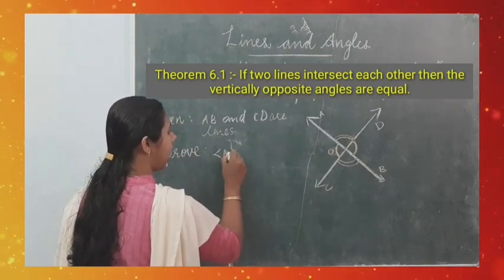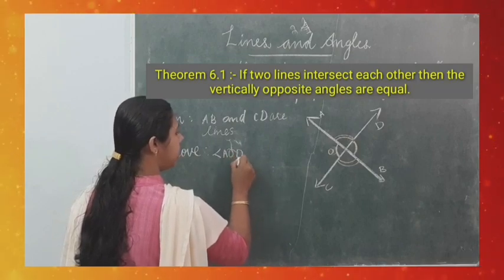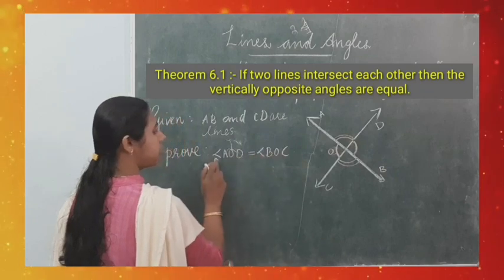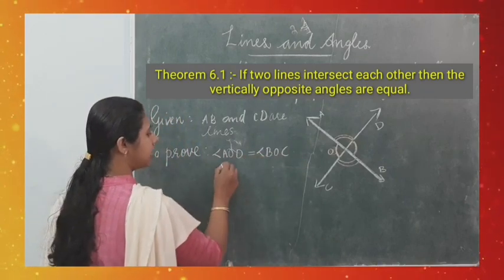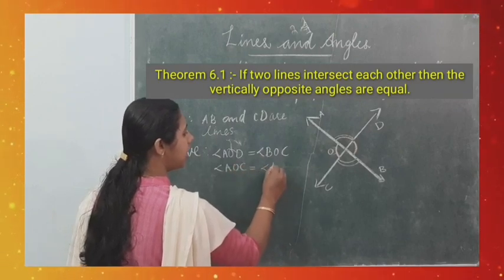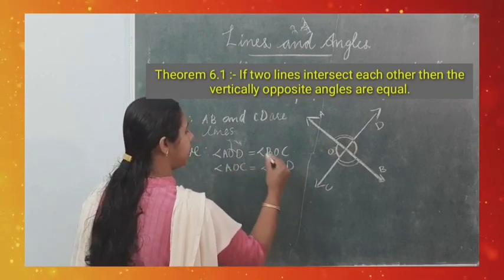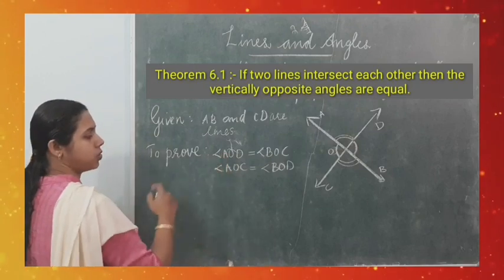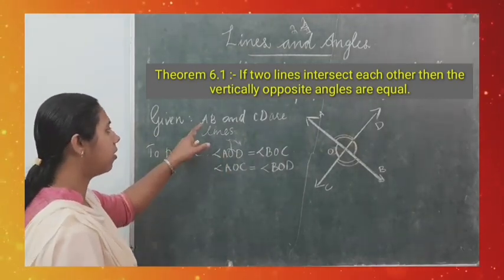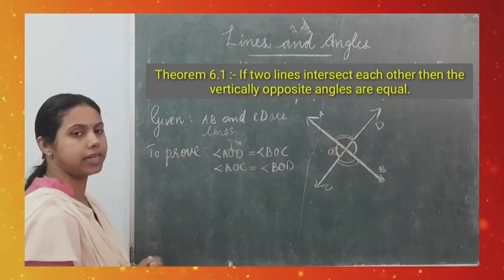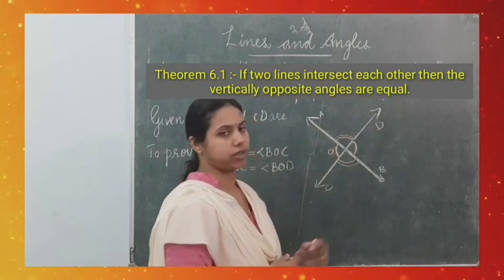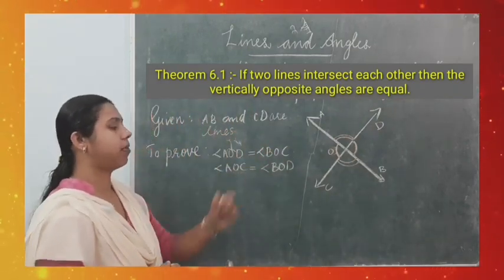To prove: angle AOD = angle BOC and angle AOC = angle BOD. The given thing is only that AB and CD are lines. If two lines intersect each other, they are intersecting at a point. How can we show that these two angles are equal? We have already studied the linear pair axioms: if a ray stands on a line, then the adjacent angles formed sum to 180°.